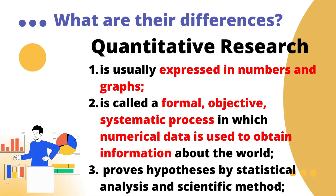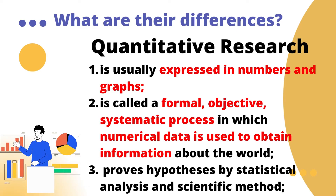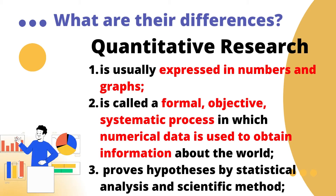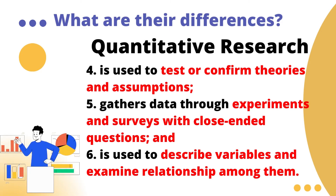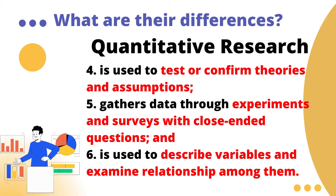How are they different from one another? Quantitative research is usually expressed in numbers and graphs. Hence, it is called a formal, objective, systematic process in which numerical data is used to obtain information about the world. Quantitative research proves hypotheses by statistical analysis and scientific method. It is also used to test or confirm theories and assumptions, gathers data through experiments and surveys with close-ended questions, and is used to describe variables and examine relationships among them.